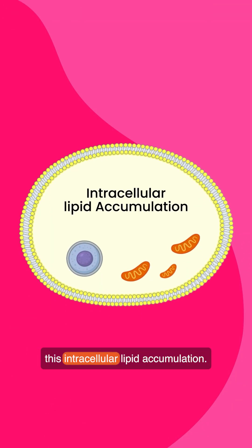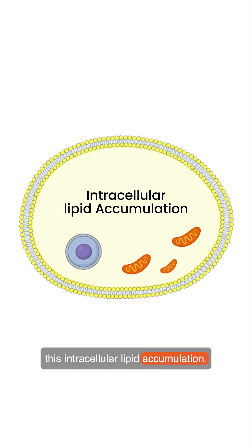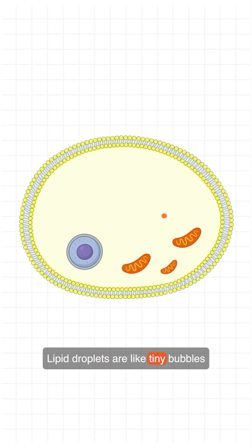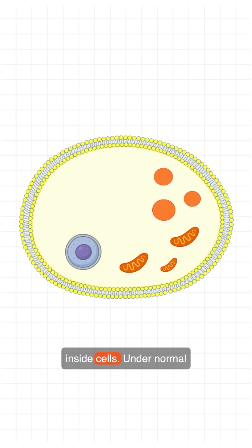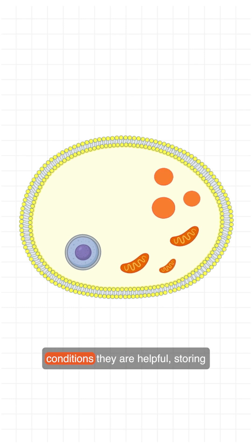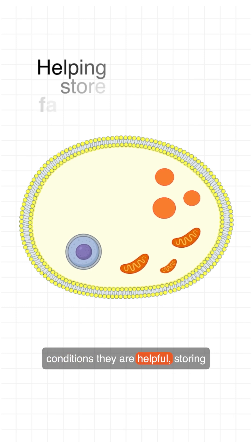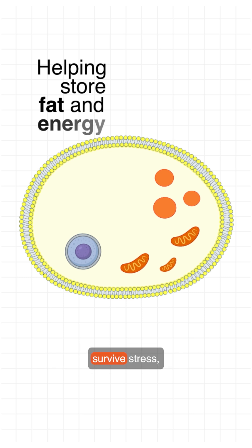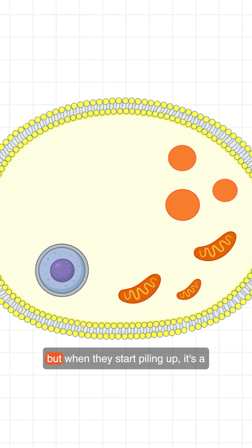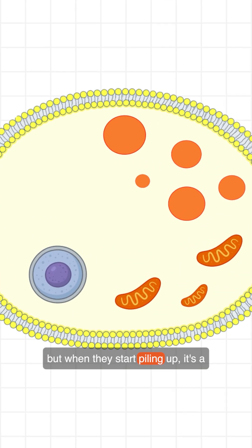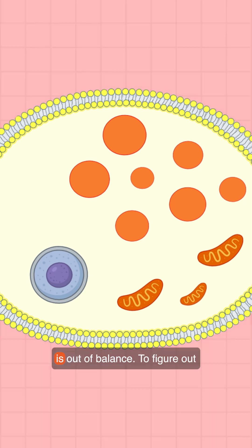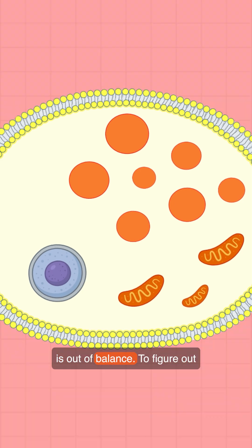ApoE4 expression was linked to this intracellular lipid accumulation. Lipid droplets are like tiny bubbles inside cells. Under normal conditions, they are helpful, storing fat for energy or helping the cells survive stress. But when they start piling up, it's a red flag that the cell's metabolism is out of balance.